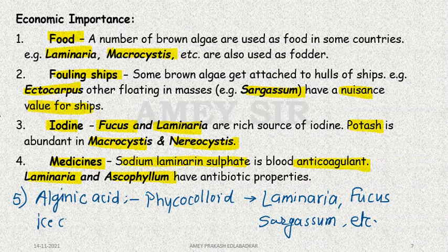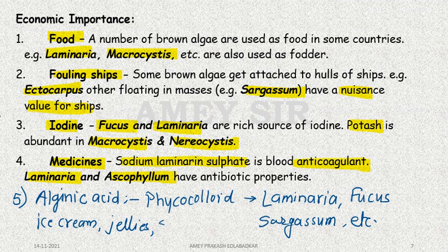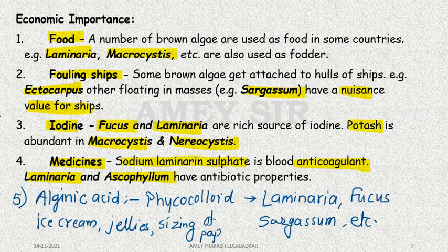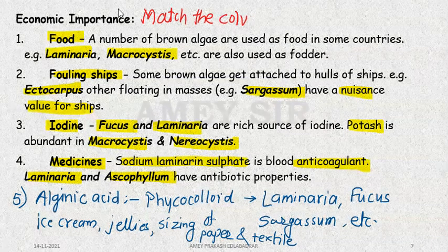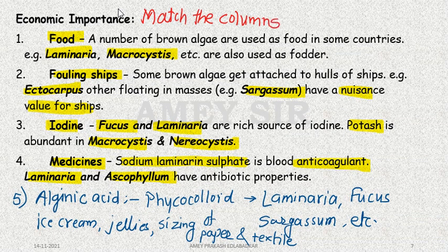Alginic acid is used in our favorite things — ice cream, jellies, sizing of textiles, and sizing of paper. The most important question type for economic importance is match the columns, where these questions are easily framed. Remember this point.